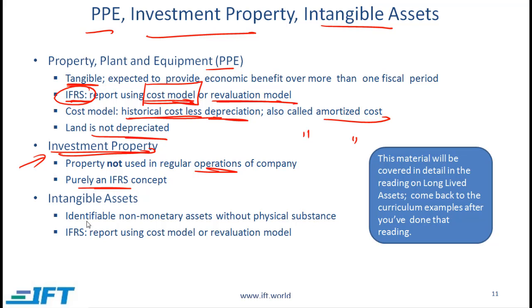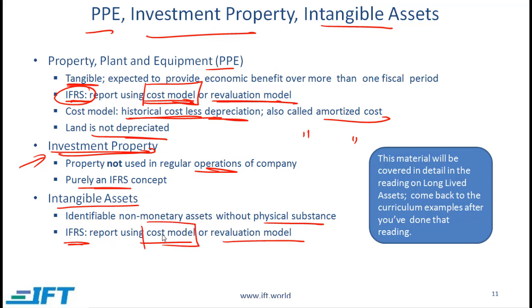Intangible assets are identifiable non-monetary assets without physical substance. Classic examples would be copyrights and patents. According to IFRS, we report intangible assets using the cost model or revaluation model. US GAAP allows only the cost model. These items will be covered in detail later when we do the reading on long-lived assets.